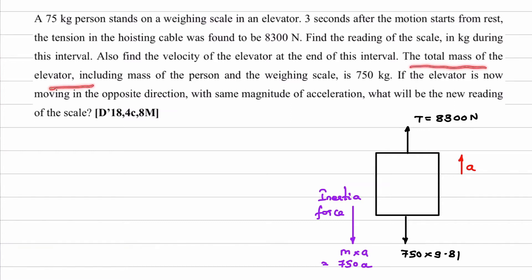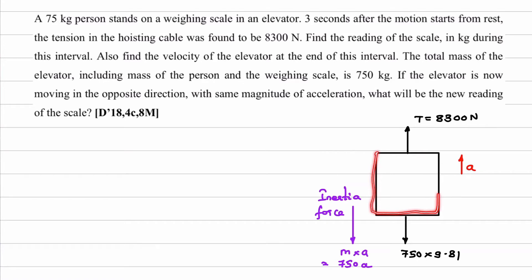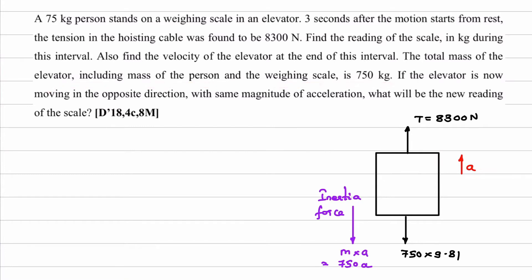The total mass of elevator including mass of person and weighing scale is 750 kg. Here there will be a weighing scale and a person. Weight of all these things — elevator, mass of the person and weighing scale — it is 750 kg. That is why I have shown in the downward direction weight 750 into 9.81. If the elevator is now moving in the opposite direction with the same magnitude of acceleration, what will be the new reading of the scale? In the first case it is not given, but here we will assume the lift is moving in the upward direction.